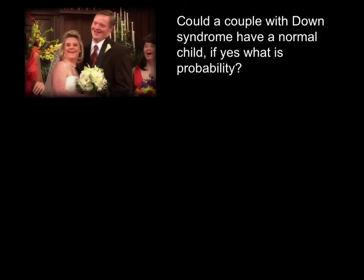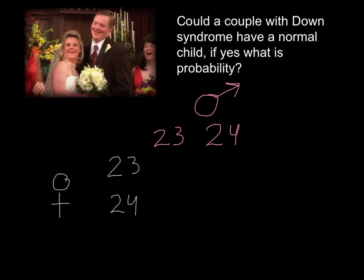Here is the second problem: could a couple with Down syndrome have a normal child? If yes, what is the probability? As we already solved with our previous problem and found that there is 50% of the chances for the sperm of the father to have normal number of chromosomes, like 23, and 50% of the chances to have 24 chromosomes. The same also applies to the mother that would have 50% of chances that it has normal egg with normal number of chromosomes and 50% chance that the number would be 24.